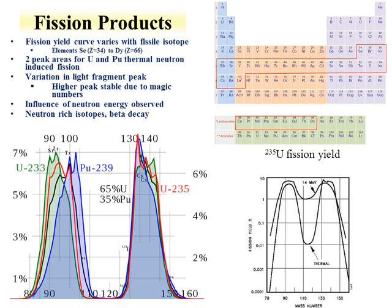One trend is that the high-Z peak is fairly constant while the low-Z peak varies. For instance, if one wants to make molybdenum-99, the fission process has a fairly high yield, which is why fissioning of uranium-235 is used to produce molybdenum-99, which then decays into technetium-99m.